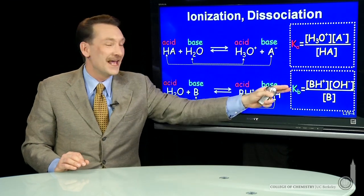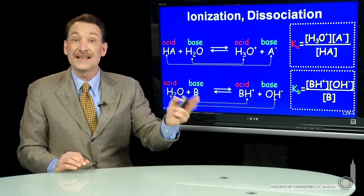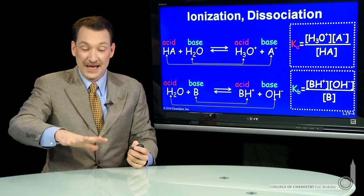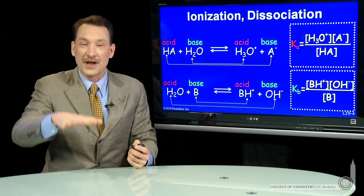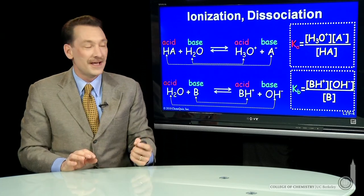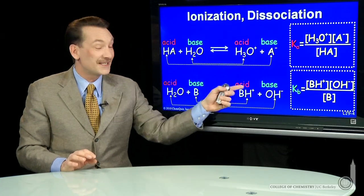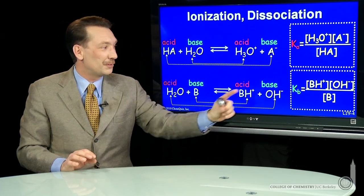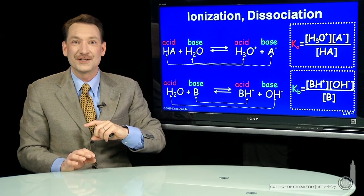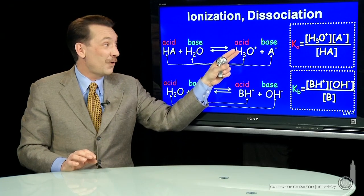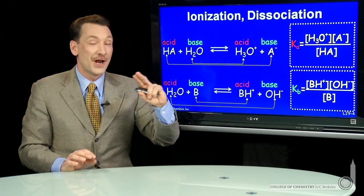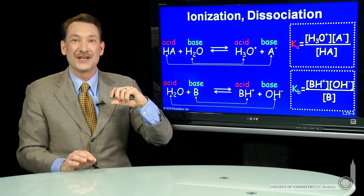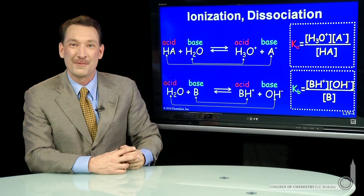So we have Ka and Kb — acid and base dissociation constants — and we can look these up in tables. Those tables will tell us the relative strengths of acids and bases and allow us to predict the extent these reactions proceed — the extent to which you produce H3O plus and OH minus in solution. H3O plus and OH minus are the products of ionization and dissociation, and they signal the presence of an acid or a base.